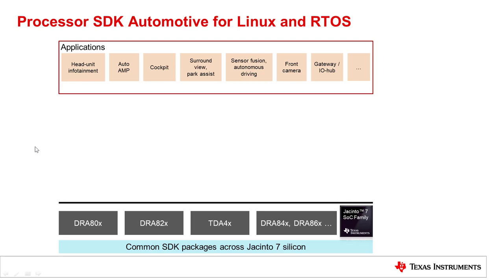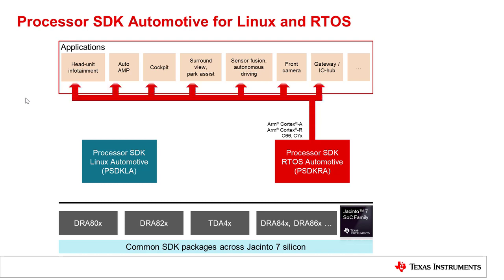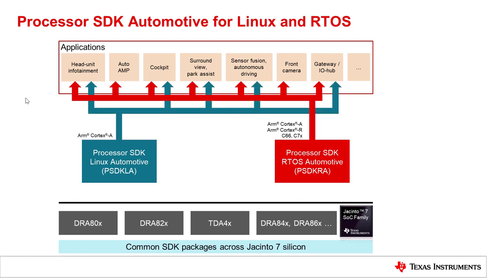Processor SDK consists of two installer packages: one for developing Linux side applications and another for developing RTOS side applications. In a typical end application, both Linux and RTOS side packages are needed. For example, most applications will have some software running on ARM Cortex-R5, the C66 or C7x DSP — this needs the RTOS SDK. The RTOS SDK is complemented by Linux running on ARM Cortex-A72, which is included as part of the Linux SDK.